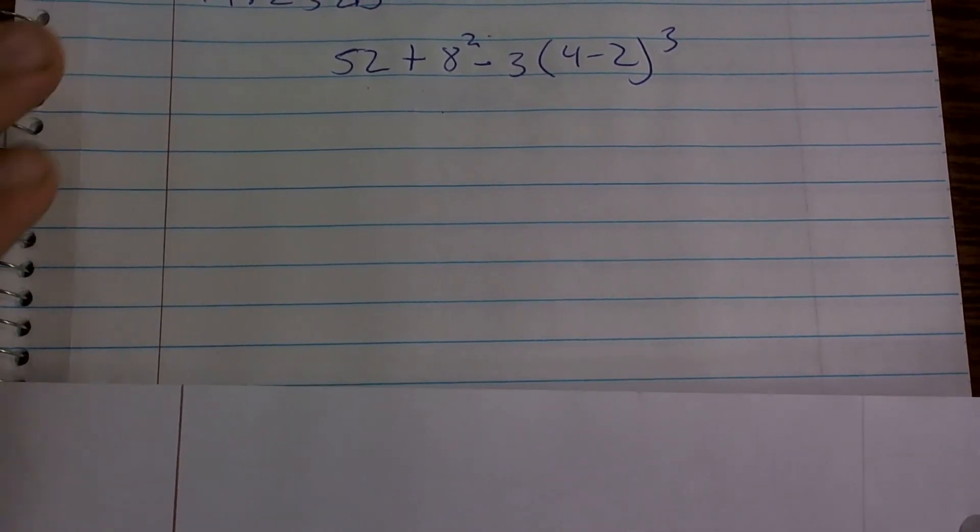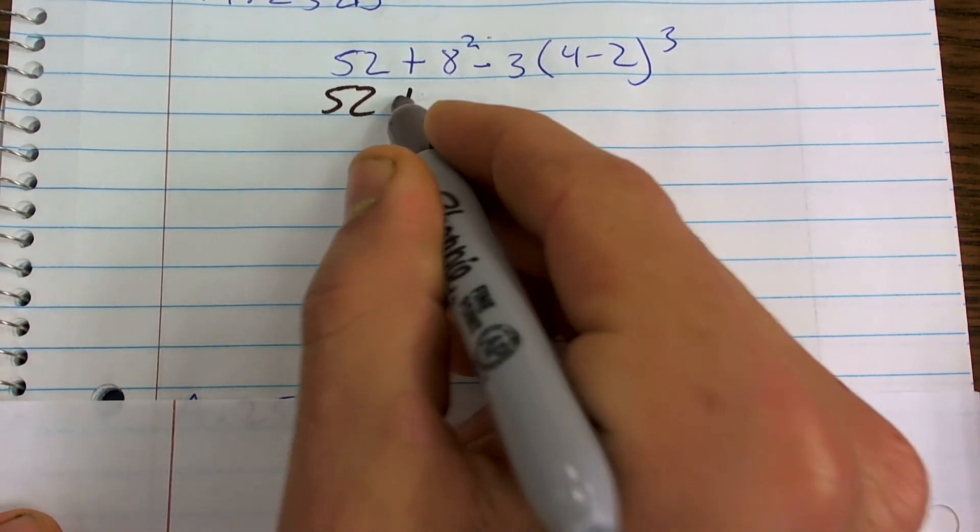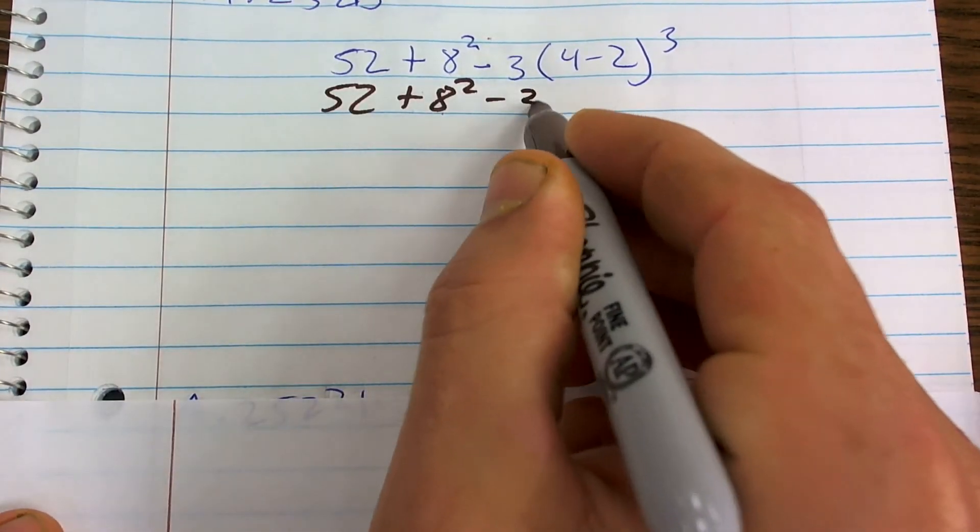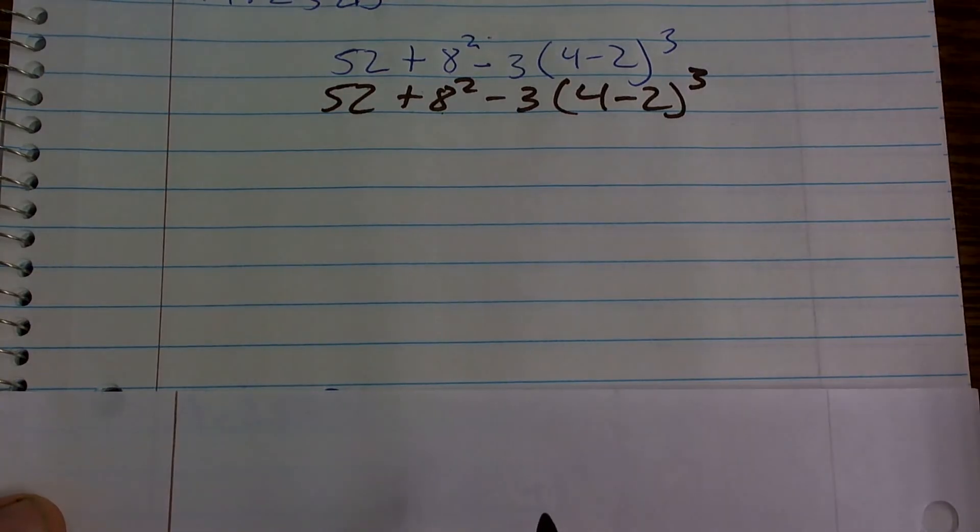All right, beware, this problem is not for the faint of heart. So what we have here is 52 plus 8 squared minus 3 times 4 minus 2 cubed. I want to rewrite it here with a sharpie just to make sure everybody can see it correctly.